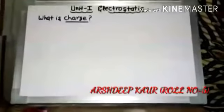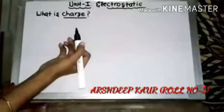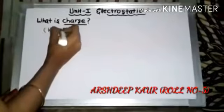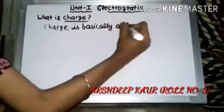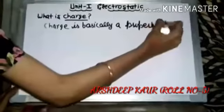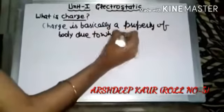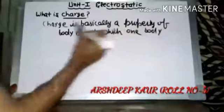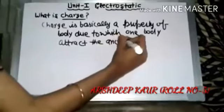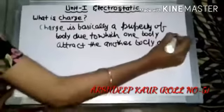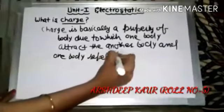Plus two class, topic is Electrostatics. Sabse pehle dimag mein question aata hai — charge kya hota hai? So, charge is basically a property of a body, due to which one body attracts the other body, or one body repels the other body.